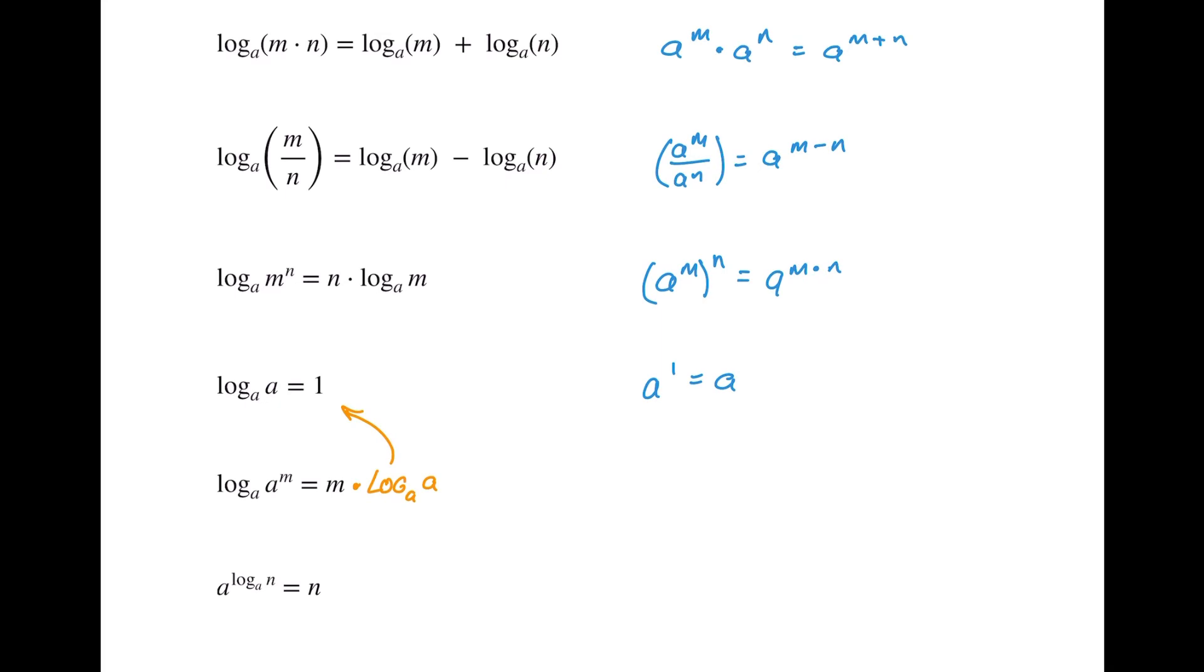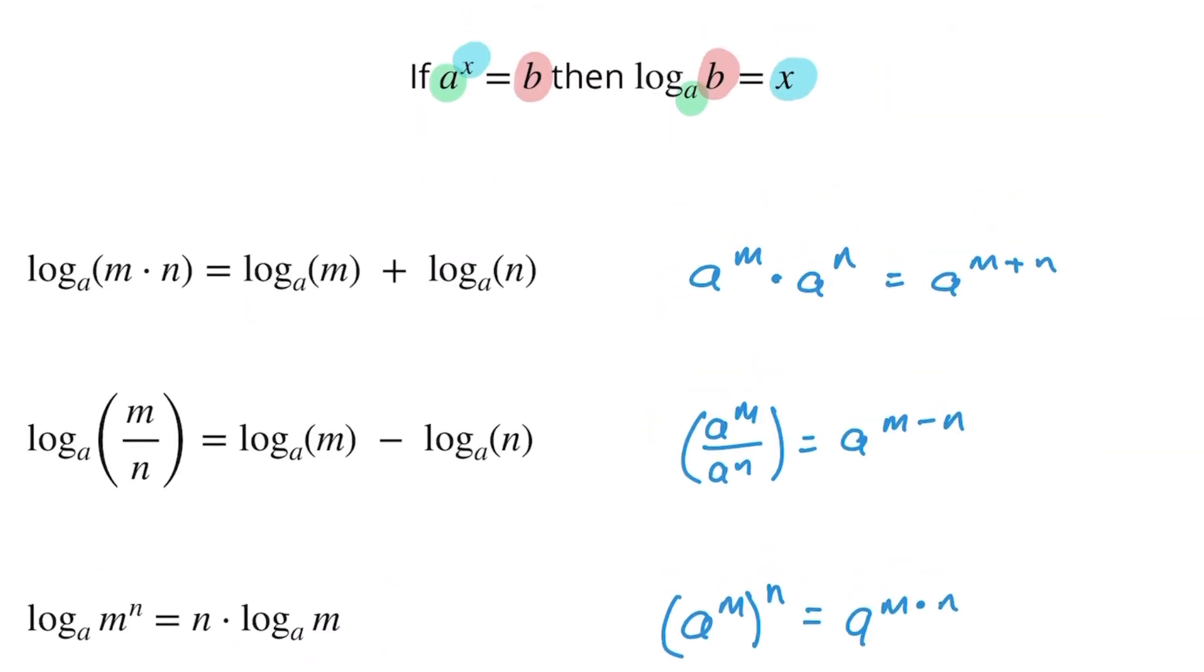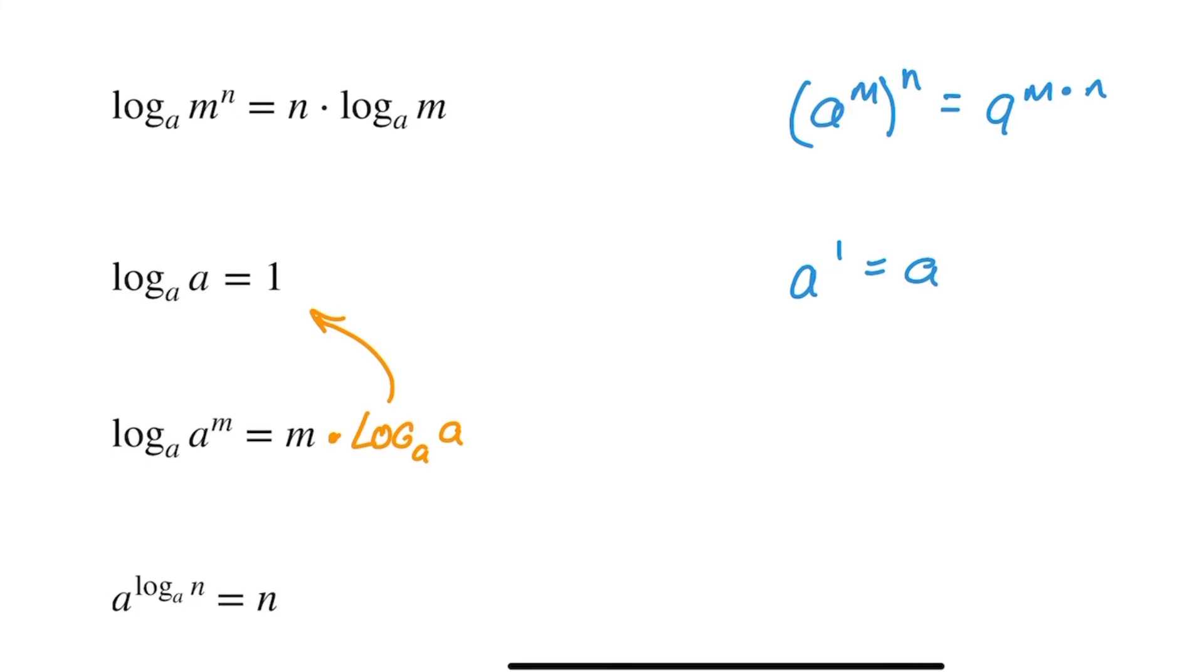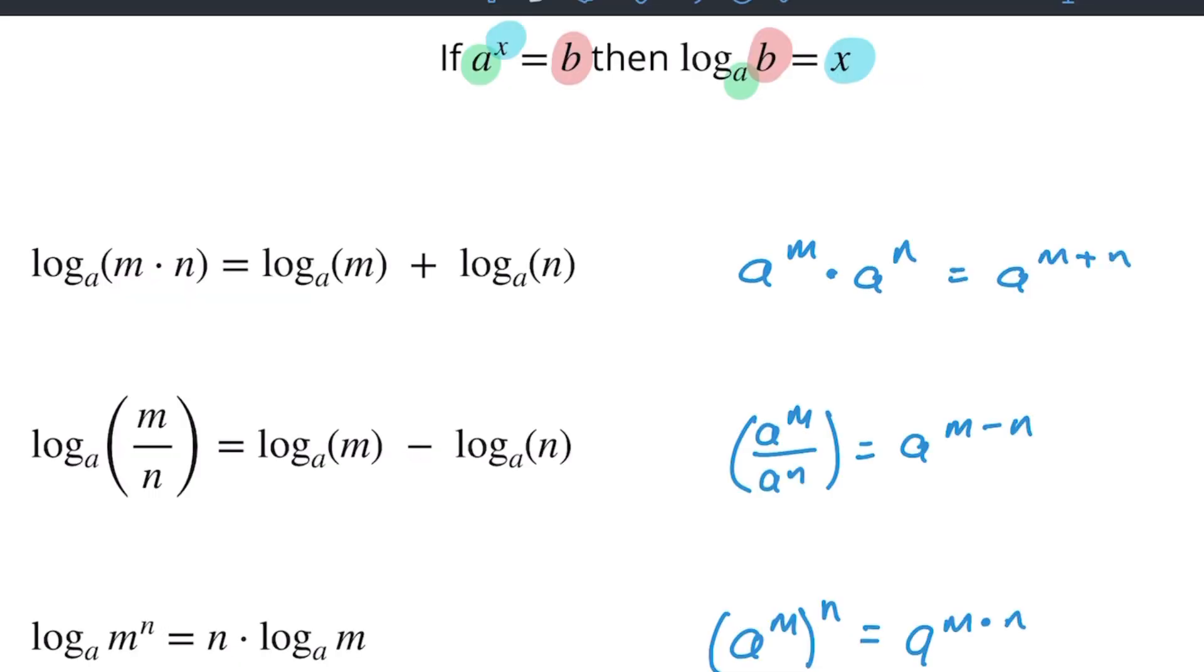And then finally, if we've got a to the power of log base a of n, that equals n. Well, let's go back to this thing up here. One of the ways that I sometimes like to describe this is in order to write this as a log, I swing this a over here, right? So I swing this over and it becomes a log. Just like here, I'm swinging a over and then I'm getting x equals log base a of b, right?